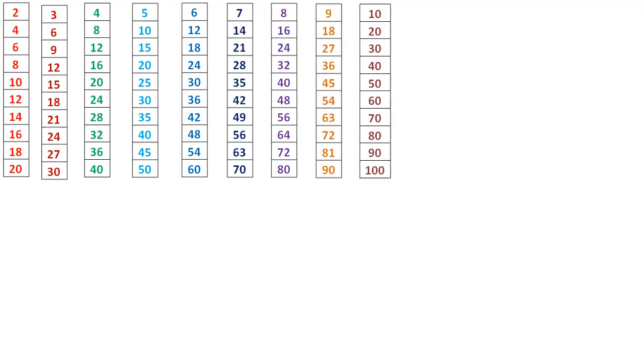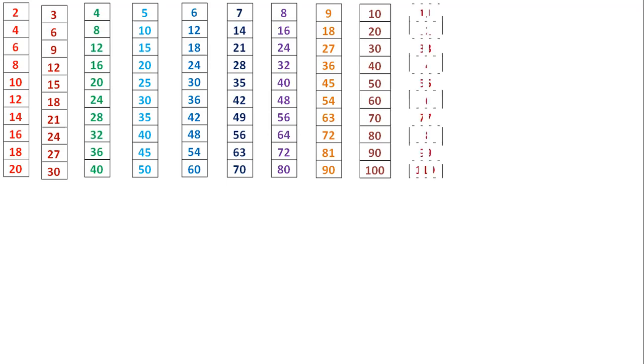10 times 1 is 10, 10 times 2 is 20, 10 times 3 is 30, 10 times 4 is 40, 10 times 5 is 50, 10 times 6 is 60, 10 times 7 is 70, 10 times 8 is 80, 10 times 9 is 90, 10 times 10 is 100.